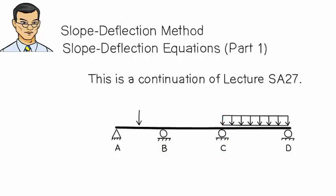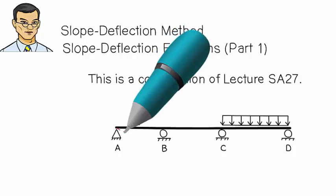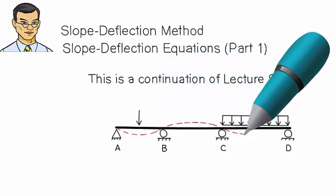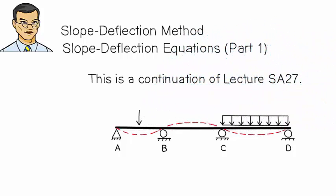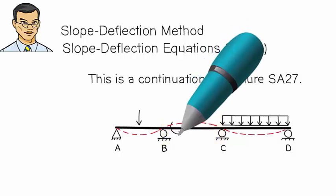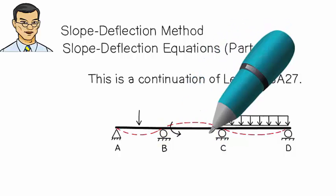First, we examine the simpler case, where there are no external loads placed on the segment. Although such a segment is not directly subjected to any loads, it does deform and carries internal forces. For example, the concave up deflection of segment BC means the member carries a counter-clockwise moment at B and a clockwise moment at C.